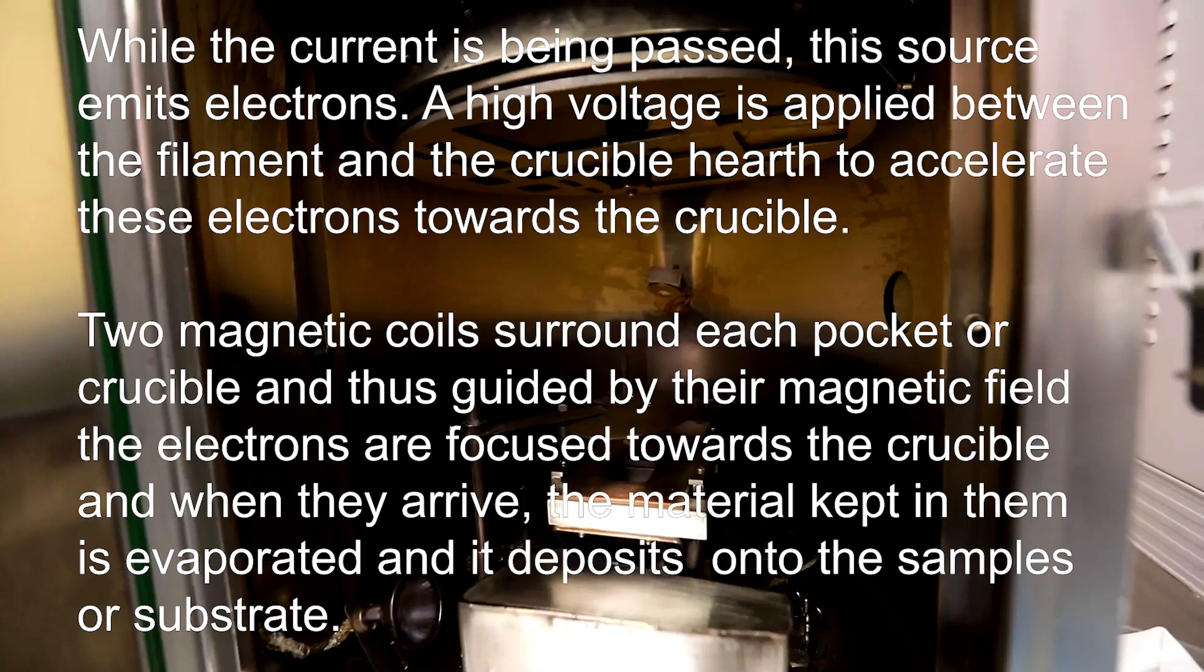Two magnetic coils surround each pocket or crucible and thus guided by their magnetic field, the electrons are focused towards the crucible. And when they arrive, the material kept in them is evaporated and it deposits onto the samples or substrate.